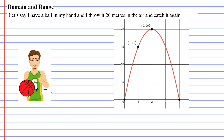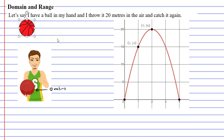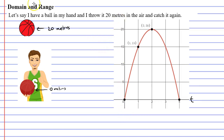Right now we would say that the ball is 0 meters above my hand, and when the ball is thrown it gets as high as 20 meters above my hand. Then it falls and eventually comes back and I catch it. We can illustrate the situation using the graph at right. Our horizontal axis represents time, labelled t, and our vertical axis represents the distance of the ball above my hand, labelled d.